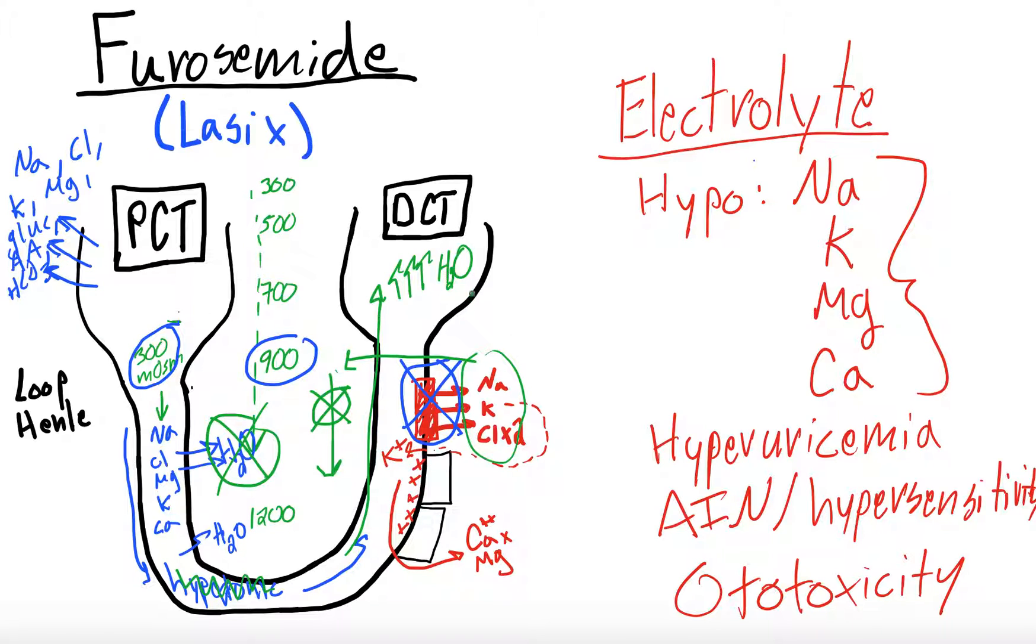In addition to that, and remember that the distal convoluted tubule goes into, eventually, the collecting duct, I'm just going to do CD, and eventually, this is what is excreted. So, in addition to that, the tubule is going to have more sodium, potassium, chloride, calcium, and mag, because you're inhibiting this mechanism. So, you're going to have increased excretion of water, calcium, sodium, potassium, and mag. Does that look familiar? Exactly.